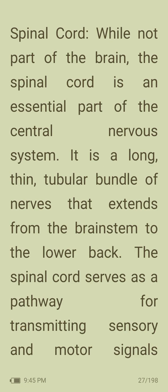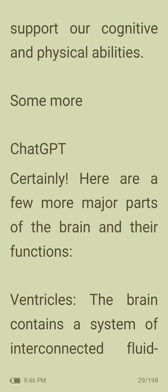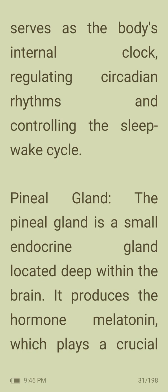Spinal cord: while not part of the brain, the spinal cord is an essential part of the central nervous system — a long, thin tubular bundle of nerves extending from the brainstem to the lower back, serving as a pathway for transmitting sensory and motor signals between the brain and the rest of the body. Ventricles: the brain contains a system of interconnected fluid-filled cavities called ventricles, which produce and circulate cerebrospinal fluid providing cushioning and nourishment for the brain and spinal cord. Suprachiasmatic nucleus (SCN): a small group of cells in the hypothalamus that serves as the body's internal clock, regulating circadian rhythms and controlling the sleep-wake cycle.